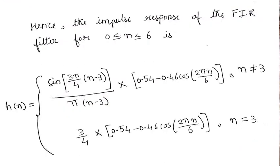Hence, the impulse response of FIR filter for N 0 to 6 is defined as H of N equals HD of N, that is sin 3 pi by 4 N minus 3 divided by pi N minus 3, into the window function for N not equals 3.